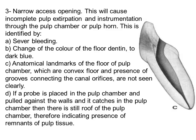A narrow access opening means you cannot complete the pulp extirpation — some pulp tissue will be left behind, causing discoloration of the tooth. Remember: if pulp tissue remains in the pulp chamber, there will be severe bleeding. Always remove the whole pulp tissue before working on the canal orifices. I never stop cleaning the pulp horn and chamber unless there is no bleeding — bleeding is my detector that pulp tissue is still present. Clean it first, then start locating the canals.